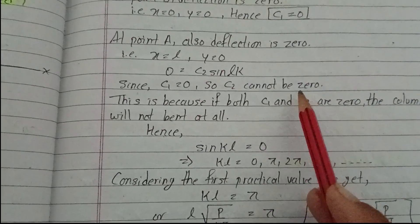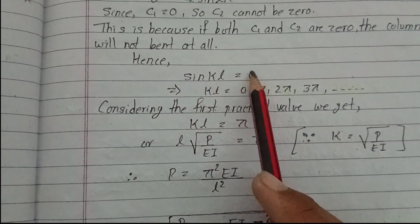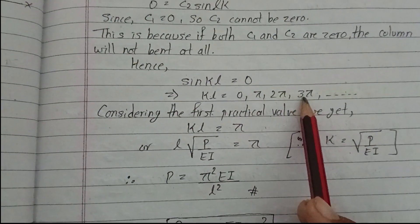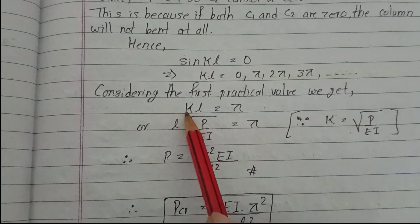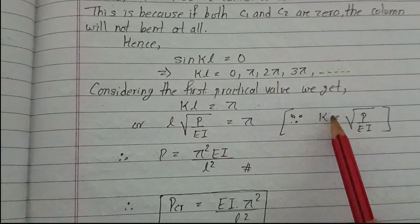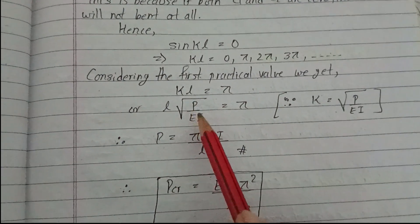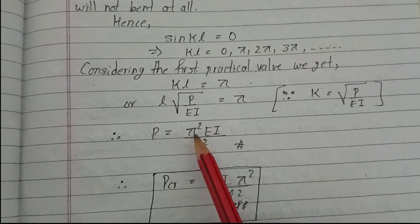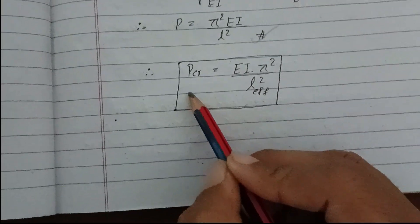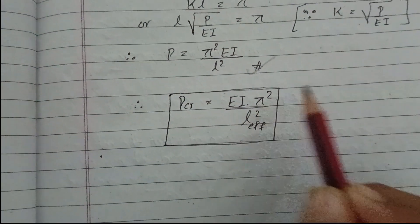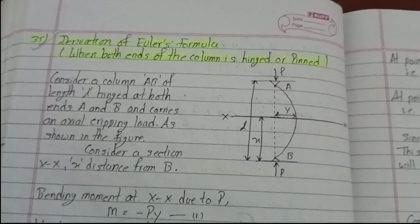sin(kL) equals zero means kL equals zero, π, 2π, 3π, etc. Considering the first practical value, we get kL equals π. Since k equals square root of P/EI, we have L times square root of P/EI equals π. Squaring both sides: P equals π²EI/L². This is the critical buckling load, the solution for Euler's formula. I hope you found this useful.